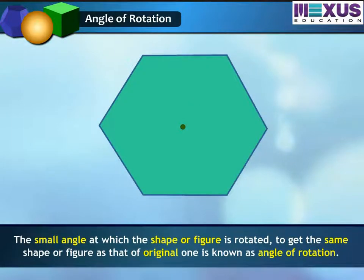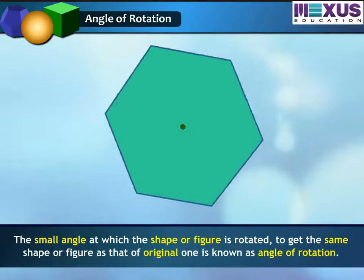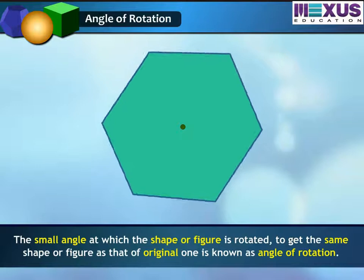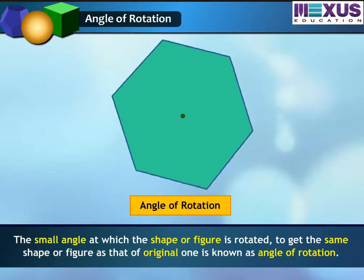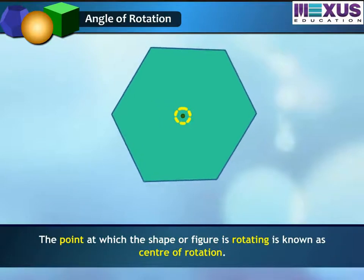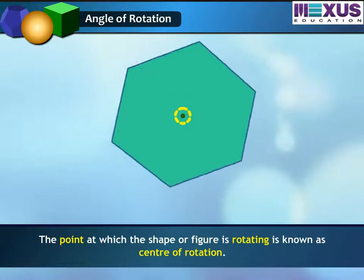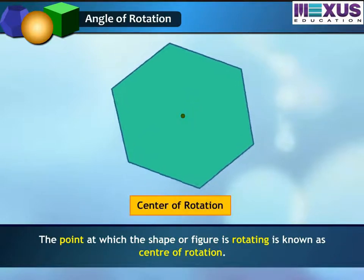The smallest angle at which the shape or figure is rotated to get the same shape or figure as that of the original one is known as the angle of rotation. The point at which the shape or figure is rotating is known as the center of rotation.